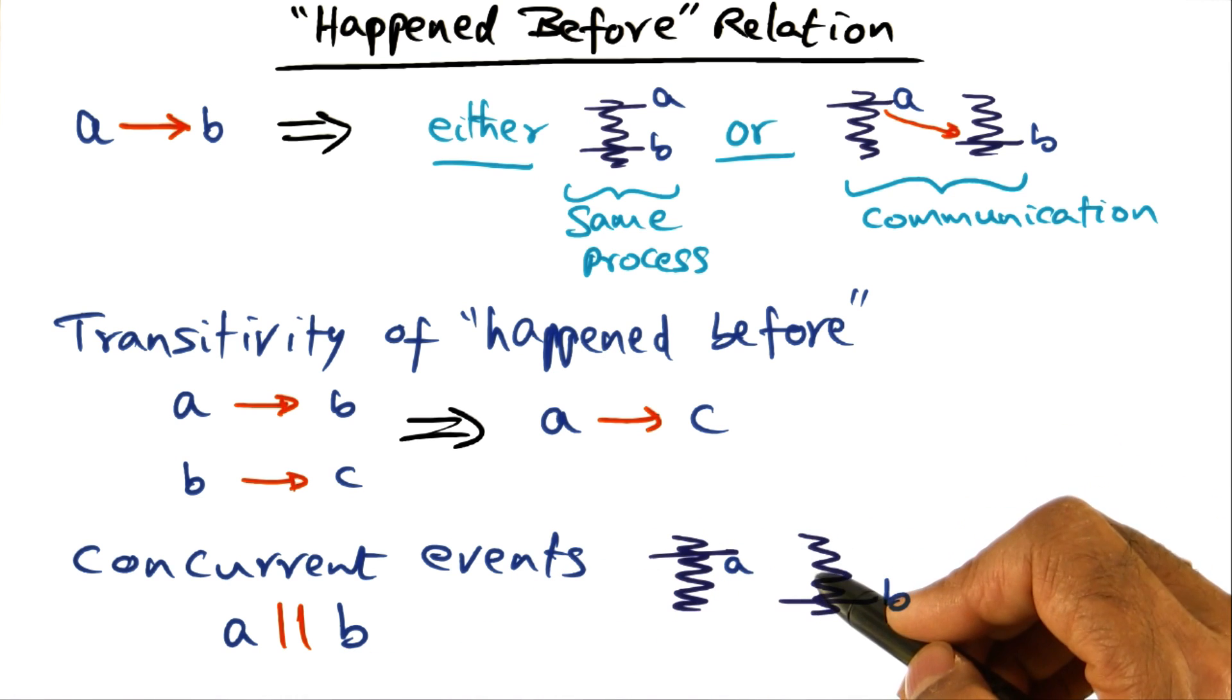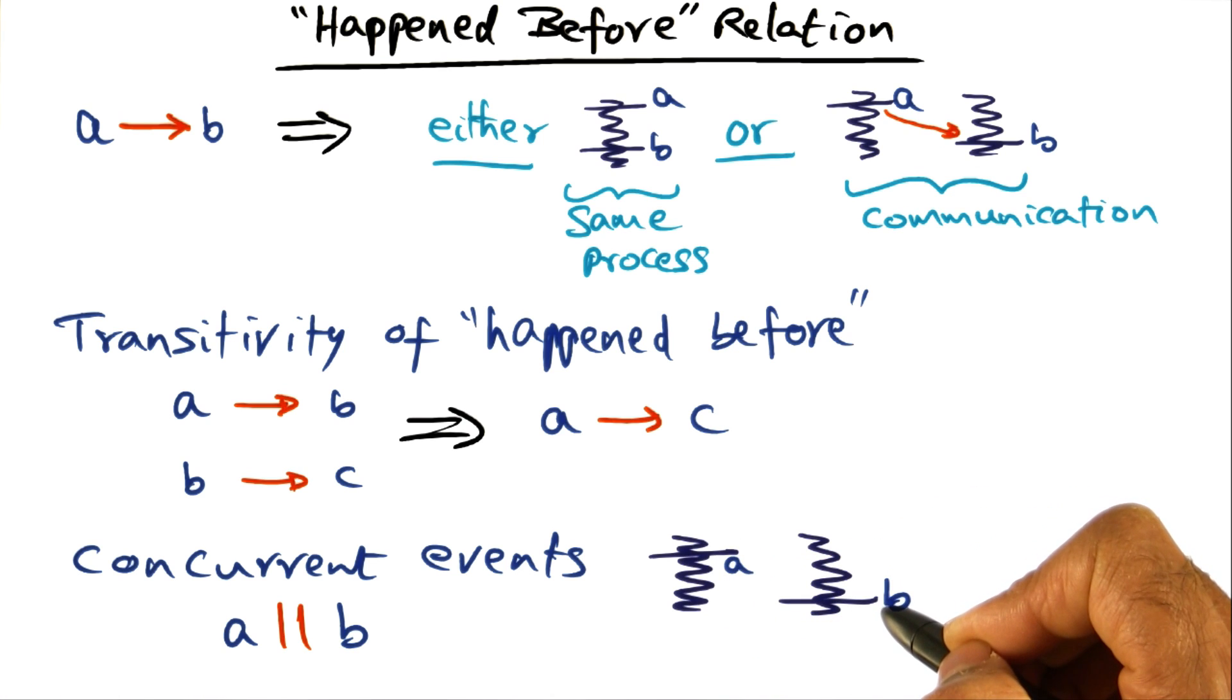Not sequential events, not connected by the happen before relationship, but they're concurrent events. So in other words, we cannot say anything about the ordering of A and B in the distributed system.